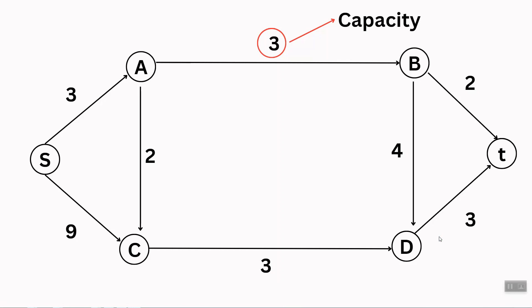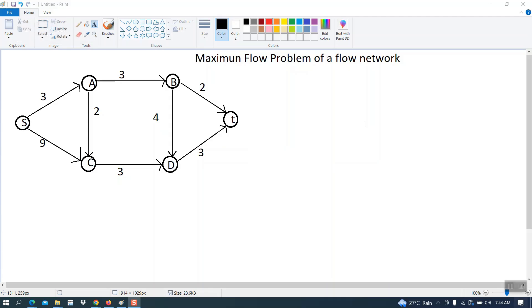For example, from vertex A to B the capacity is three, so the flow from A to B can also be at most three. Our aim is to find the maximum flow by finding augmenting paths from source to sink. Here source is represented as S and sink is represented as T.